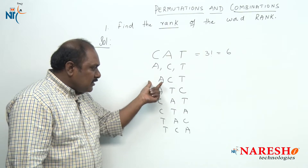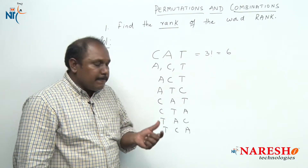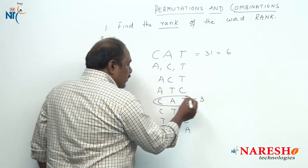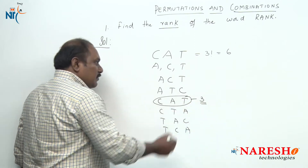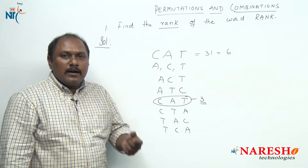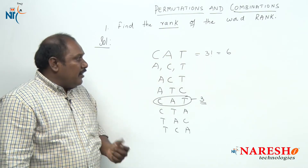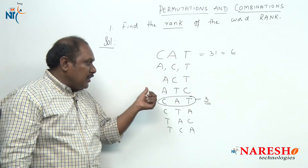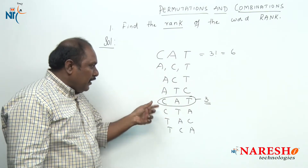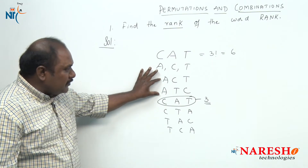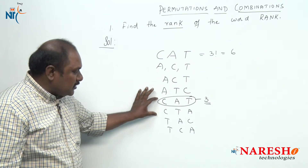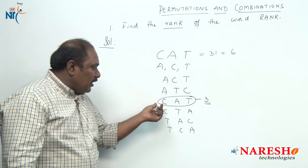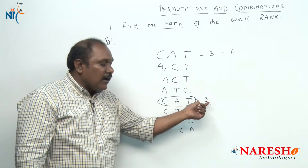In these six arrangements, what is the position of the word CAT? You can see the position of the word CAT is three. So the rank of the word CAT is three. We have two arrangements which start with A, two arrangements which start with C, two arrangements which start with T. So our word is the third word, and the rank of the word CAT is three.